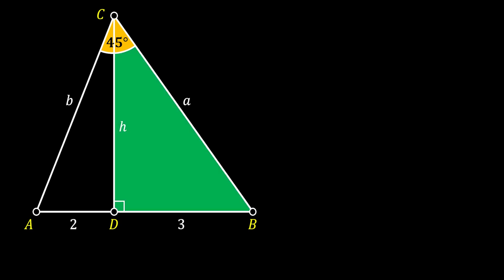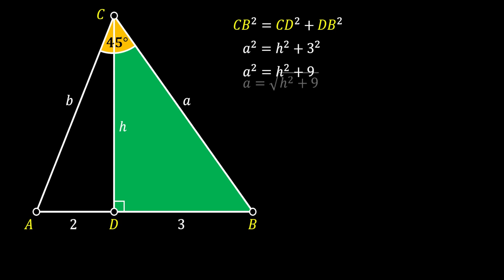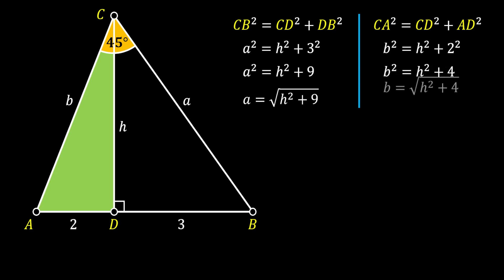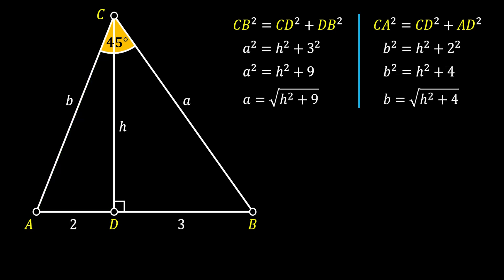Let's have a look at the right triangle CDB on the right side. We can use the Pythagorean theorem and say that the hypotenuse CB squared must be equal to the leg CD squared plus the leg DB squared. Substituting the values from our sketch, we get that side A must be equal to the square root of the quantity H squared plus 9. Repeating the same process for the right-angled triangle ADC on the left, we get that side B is equal to the square root of the quantity H squared plus 4.